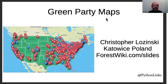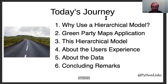Hello. Today, I'll be speaking about the Green Party maps. At first it looks like a map of the United States Green Party, but really it's a hierarchical object model of the entire organization. My name is Krzysztof Lozinski. I live in Katowice, Poland, and you can find the slides at forestwiki.com/slides.